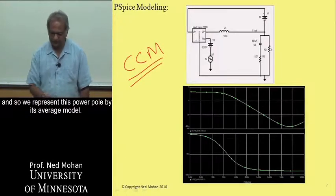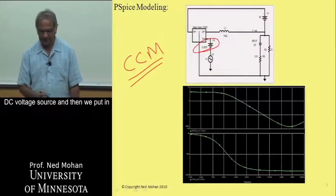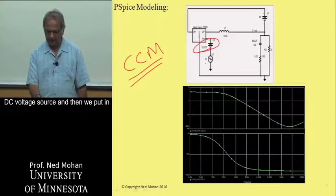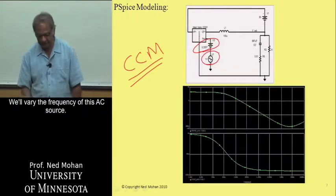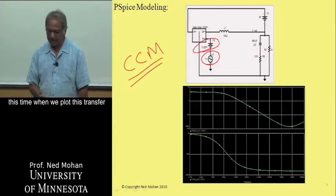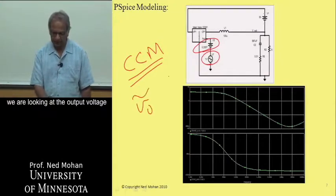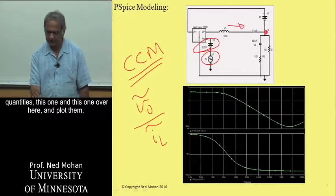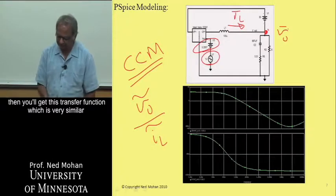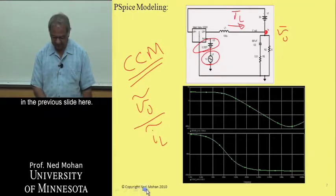In PSPICE, operating in CCM, we represent the power pole by its average model. The steady-state duty ratio is represented by a DC voltage source, and then we put in a perturbation in the duty ratio represented by an AC source whose frequency is swept, with amplitude kept at 1. We then plot the ratio of output voltage to inductor current perturbation as a function of frequency, and we get a transfer function very similar to what the analytical expression predicts.